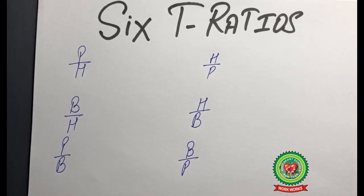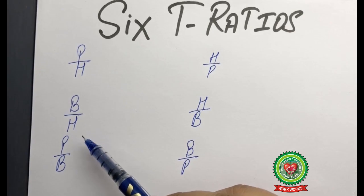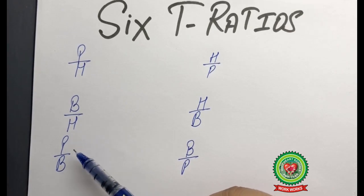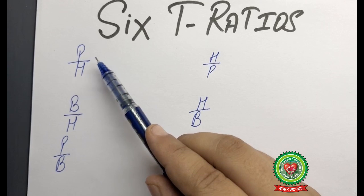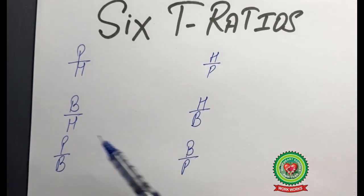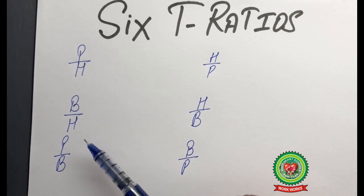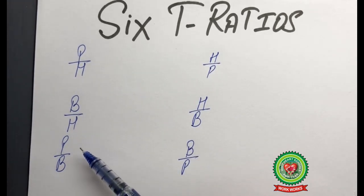The six trigonometrical ratios are: the first one is P upon H, the second is B upon H, the third is P upon B. The other three are the reciprocals of these — the reciprocal of P upon H is H upon P, the reciprocal of B upon H is H upon B, and the reciprocal of P upon B is B upon P.